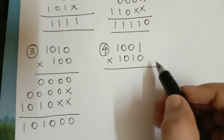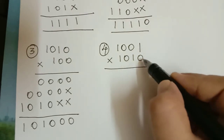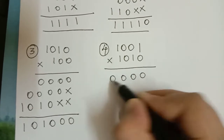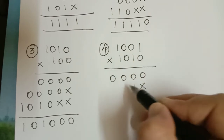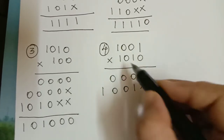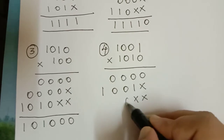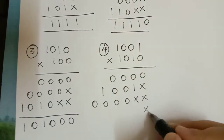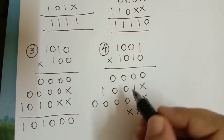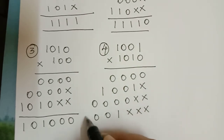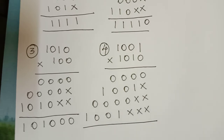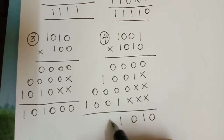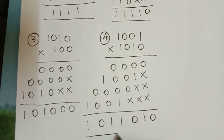Now let us see the binary multiplication of these 2 numbers. When 0 is multiplied with these 4 digits, we get 0. Then it is 1, so the number repeats. Then it is 0, so we get 4 zeros. Then it is 1, so 1 multiplied with this number gives the number as such: 1,0,0,1. Adding all these numbers we get 0,1,0,1,1,0,1. So this is the answer.